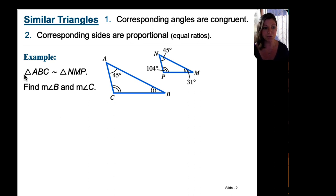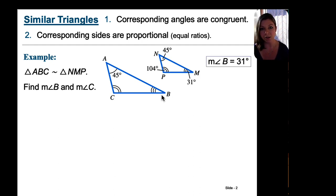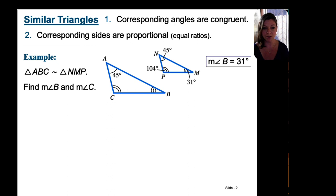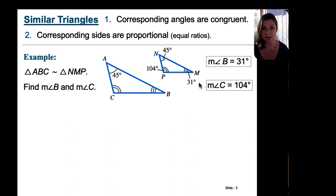The similarity statement here reads: triangle ABC is similar to triangle NMP. We're asked to find the measure of angle B and angle C. Using the figure, angle B corresponds to angle M — since angle M is 31 degrees, angle B is also 31 degrees. You could also identify this from the similarity statement: both are the center letter, each marked with three arcs indicating congruence. For angle C: C corresponds with angle P, whose measure is 104 degrees, so angle C is also 104 degrees. That illustrates the first characteristic of similar triangles — corresponding angles are congruent.